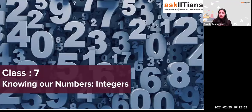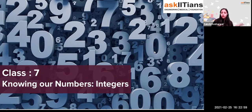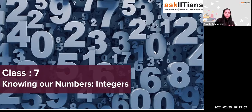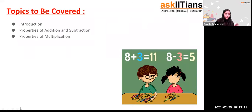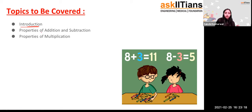We are on integers — also called 'Knowing Our Numbers.' Your second chapter is going to be fractions and decimals, which you did in Class 6. So the first two chapters are kind of a revision of Class 6 with some updates. Today we're going to cover: introduction, addition and subtraction properties, and properties of multiplication.